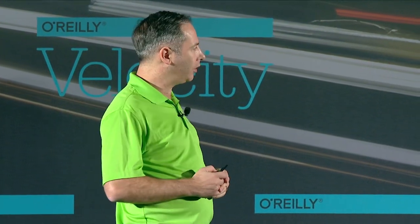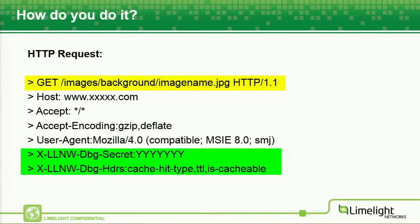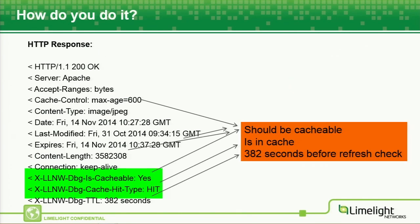Let's look at another one — this is for an image called image name. We've added the same debug secret and the same headers we're requesting. This time we can see three or four headers which indicate it should be cacheable: the cache control header, last modified, our expires, and our content length. They're all giving us a good indication that this is a cacheable object. And yes, in the debug headers coming back, it was cacheable, it was a hit, and we have 382 seconds left before we go and do another refresh check.